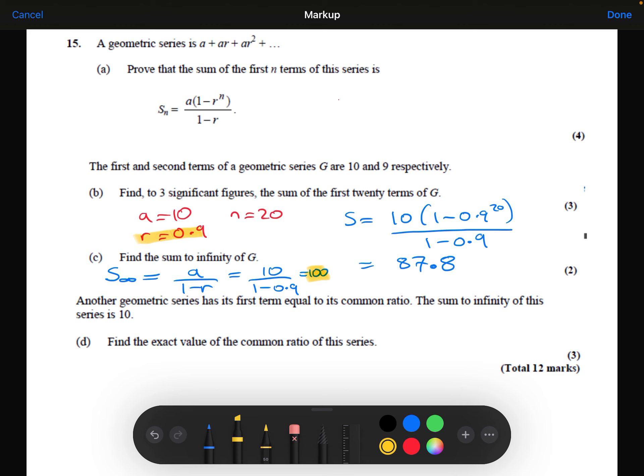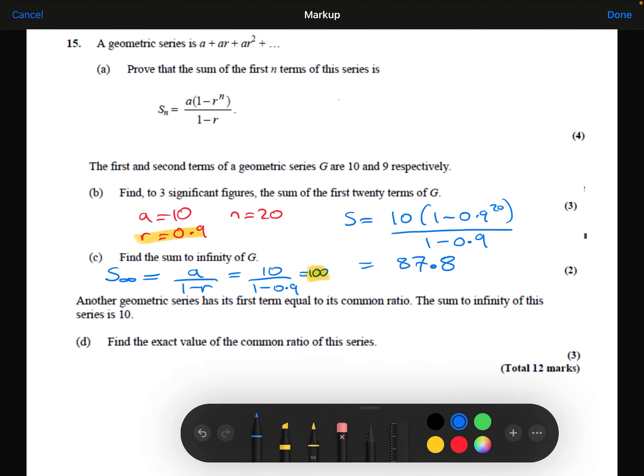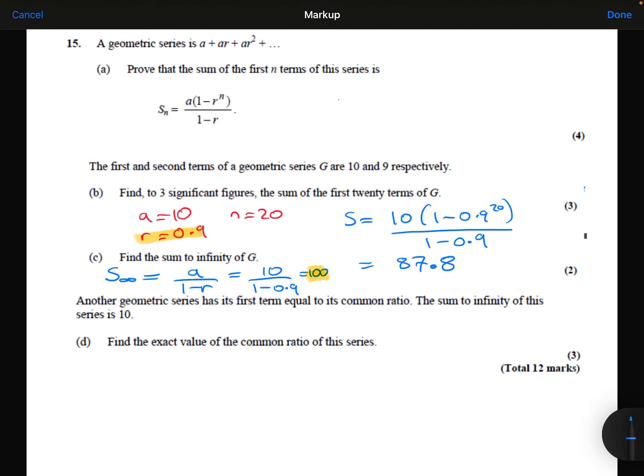We're then told that another geometric series has its first term equal to its common ratio. And we're told that the sum to infinity of this series is 10. Find the exact value of the common ratio of this series. So if its first term is equal to its common ratio, if I call its first term A, and its common ratio must also be A, if the first term is equal to the common ratio.